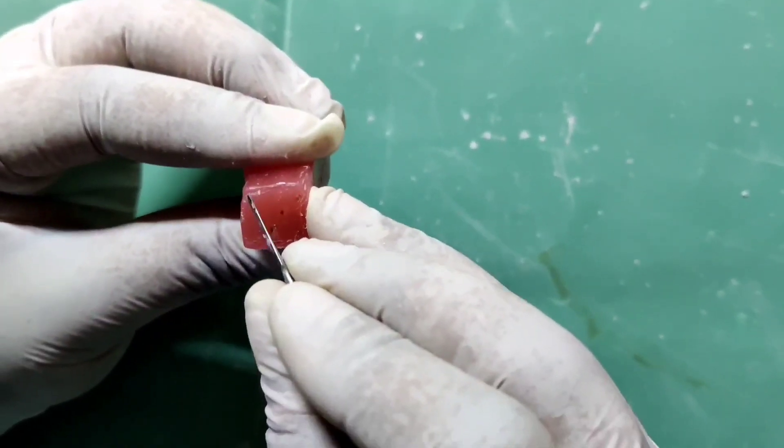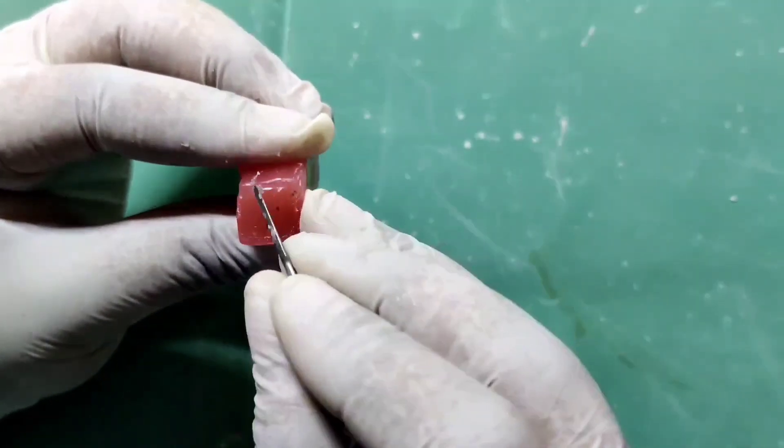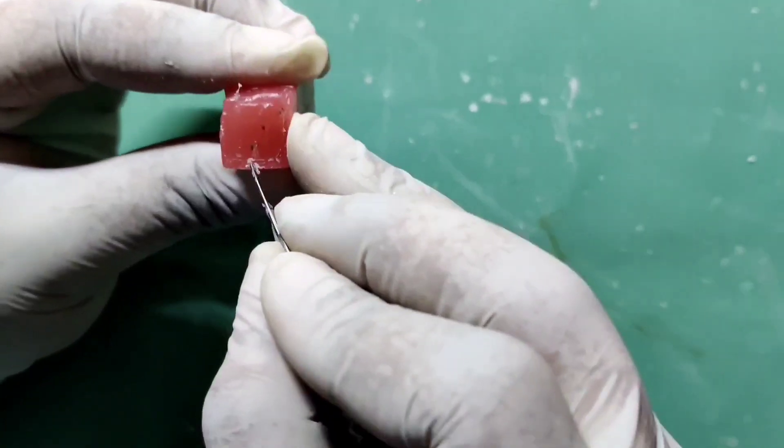From the occlusal aspect it is rhomboidal in shape. Let's draw the rhomboidal shape and remove the excess wax.